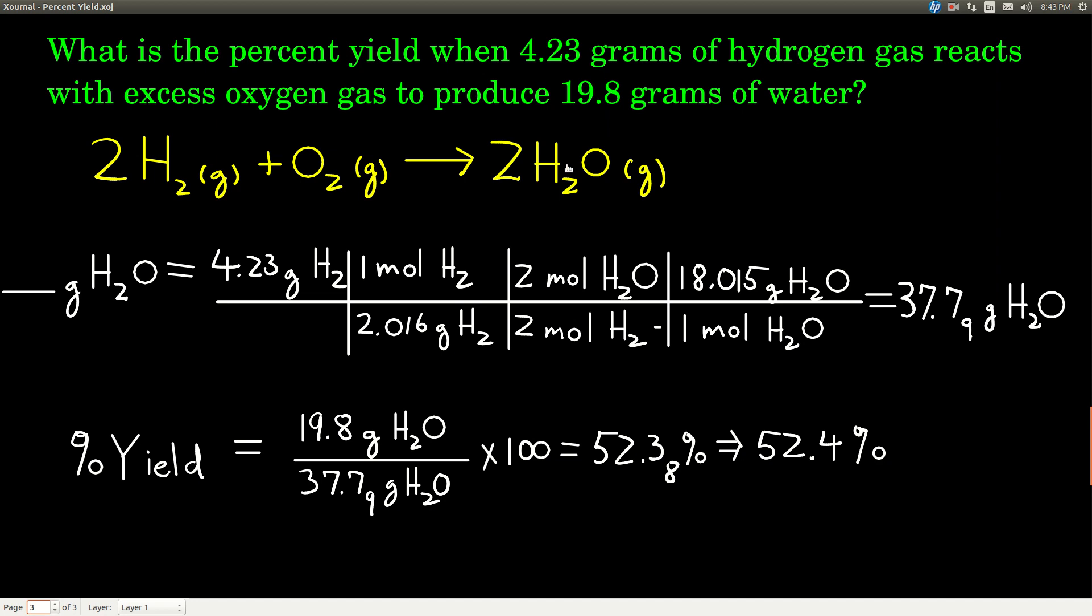And this 19.8 right here, this is your actual yield. It's how much you actually produce. To calculate the percent yield, first thing we're going to do is calculate the theoretical yield using the same type of stoichiometry problem calculations that we've been using. Once we get the theoretical yield, we can take the actual over theoretical times 100 to get the percent yield.